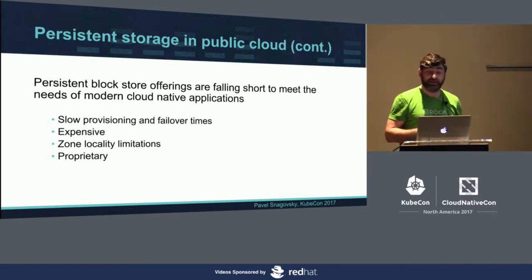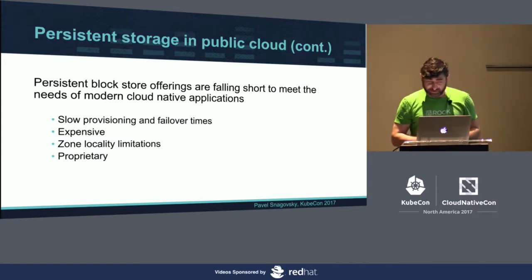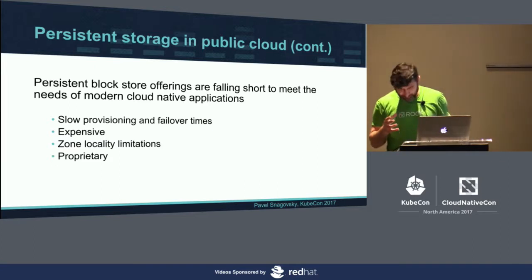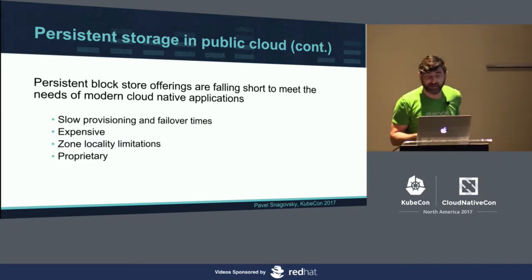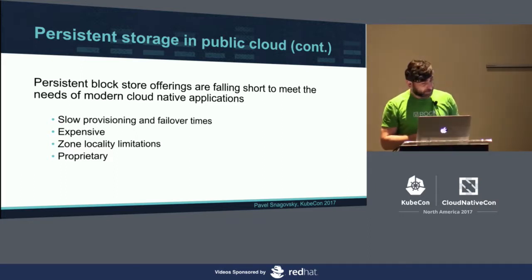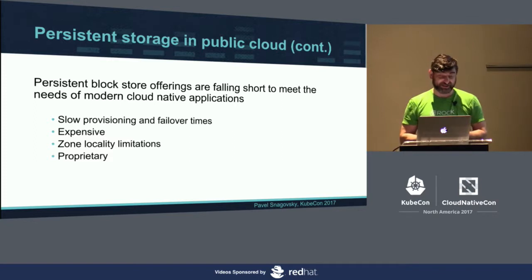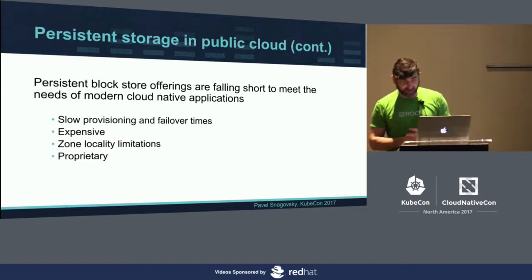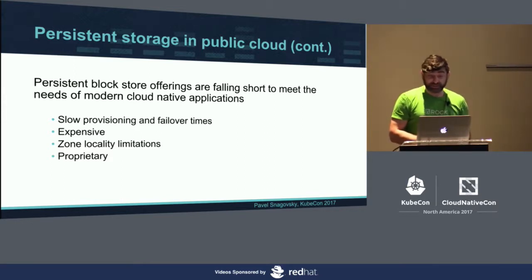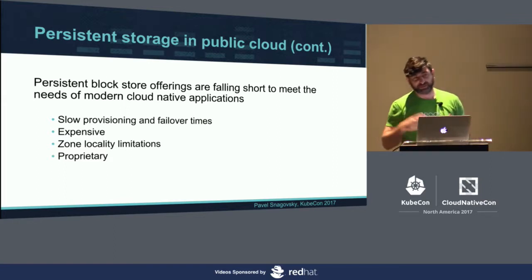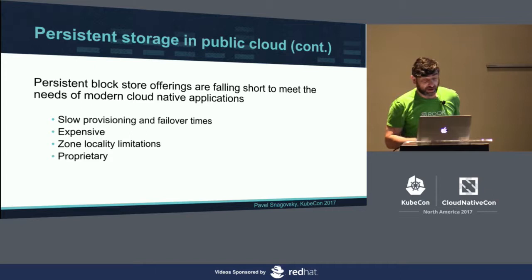However, there are a few things about current offerings that are not quite working for cloud-native applications. The provisioning time of persistent disks or EBS is significant — they take a while to provision, so they're not quite instant, and when you failover, it actually does matter, meaning your failover times will be significant. Those offerings are expensive, and besides, they have locality limitations — volumes could be zone-specific. In order to move a volume, you have to go through a snapshot and recreate it. And of course, they're proprietary.